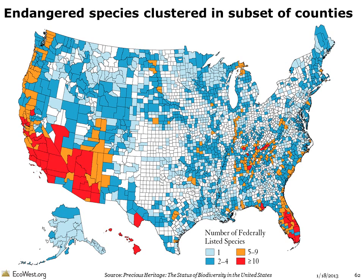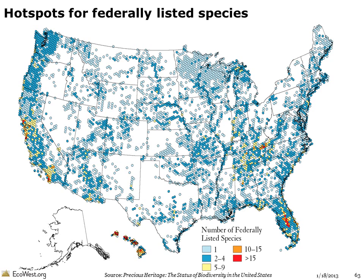This map analyzes endangered species by counties. You can see there is often considerable variation within single states, like California or Nevada, where one county may have more than 10 listed species while an adjoining county may have none. Hawaii, the Pacific Coast, the Southwest, Appalachia, and Florida stand out for their large number of listed species, but many US counties, especially in the Midwest, have no threatened or endangered species at all. Here's another look at the same data using equal-area hexagons to depict the hotspots, which avoids the problem of large counties overshadowing smaller ones. The same basic pattern exists.